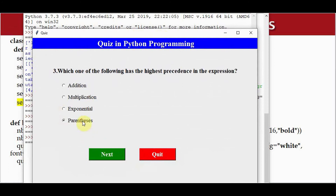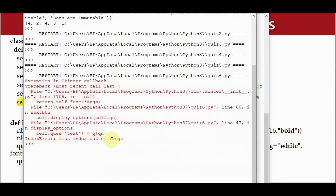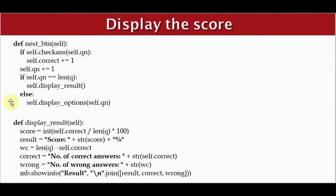After answering all questions and pressing Next again, we get an index error: list index out of range. To fix this, we modify the next_button function. If self.question equals len(q), it means all questions have been displayed and we call the display_result function to show the score. Otherwise, in the else part, we call display_options to show the next question.